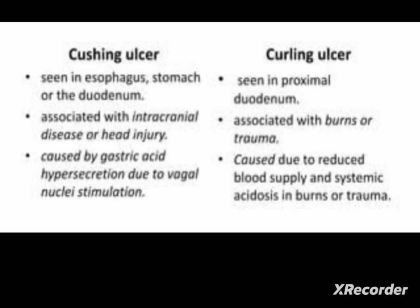Regarding treatment, both Curling and Cushing ulcers are treated with H2 receptor blockers, proton pump inhibitors, and sucralfate as ulcer healing agents. Symptomatic treatment can also be given. In the case of Cushing ulcers, vagotomy may be done as a last choice.